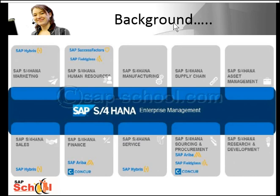A bit of background first. SAP Simple Logistics is a core component of the S4 HANA Enterprise Management solution. S4 HANA is a brand new product line and is not a legal successor of any SAP Business Suite product or SAP ERP. S4 HANA Enterprise Management has been built by simplifying the SAP ERP solution and is available on-premise as well as in the cloud.